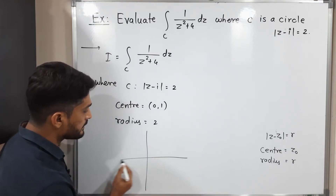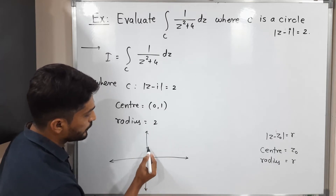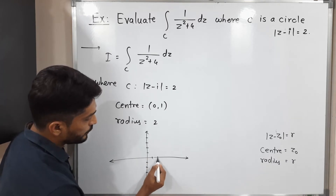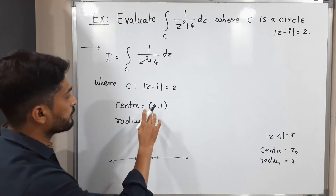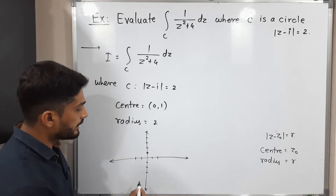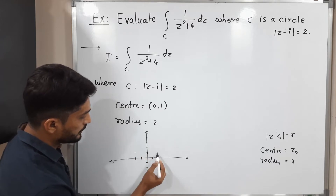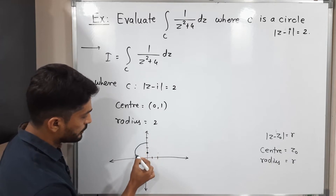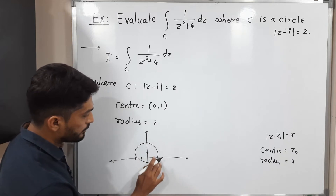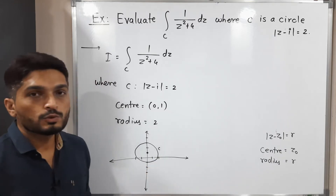So let me draw that circle so we will have a clear idea about it. This is the imaginary axis and this one is the real axis. The center of our circle is (0, 1) and the radius is 2, meaning 2 units in each direction. So our circle will look like this — this is the circle C we have.